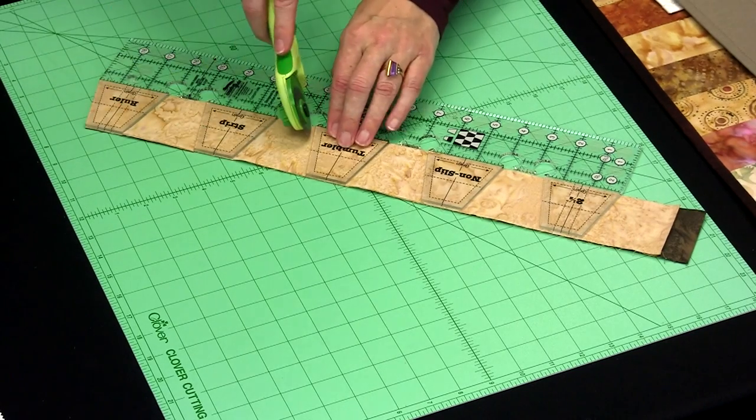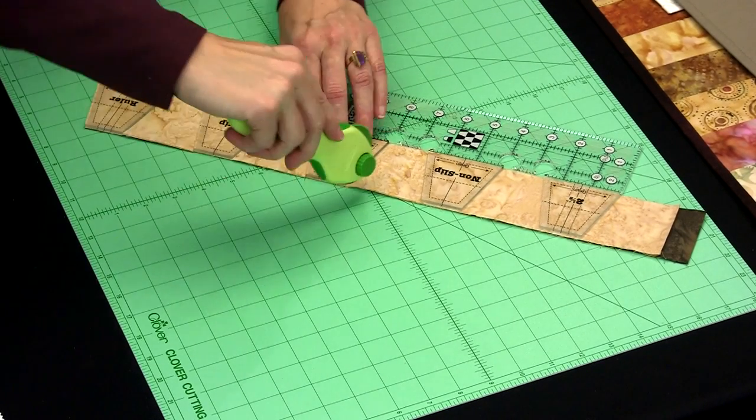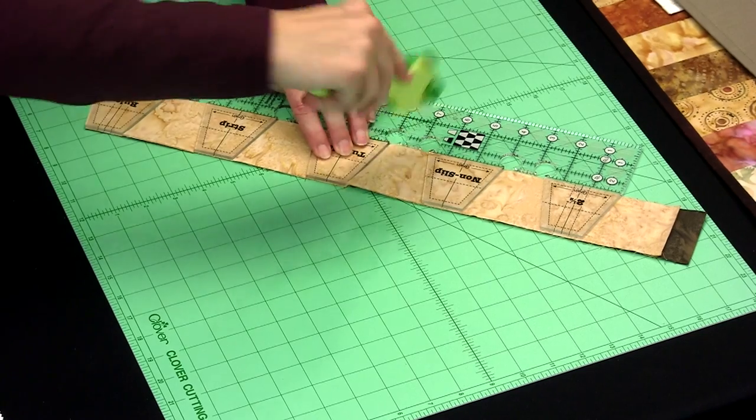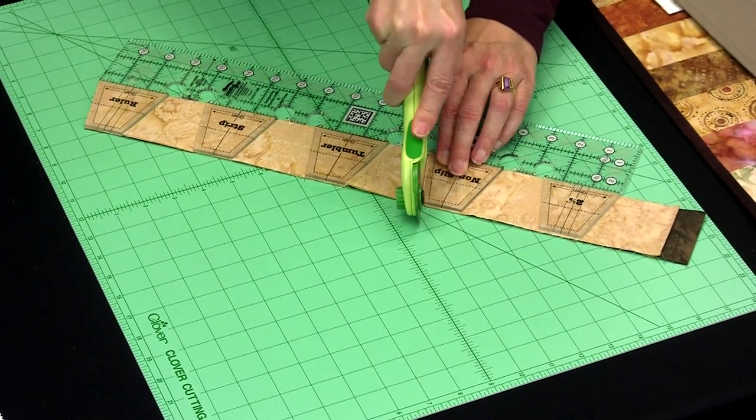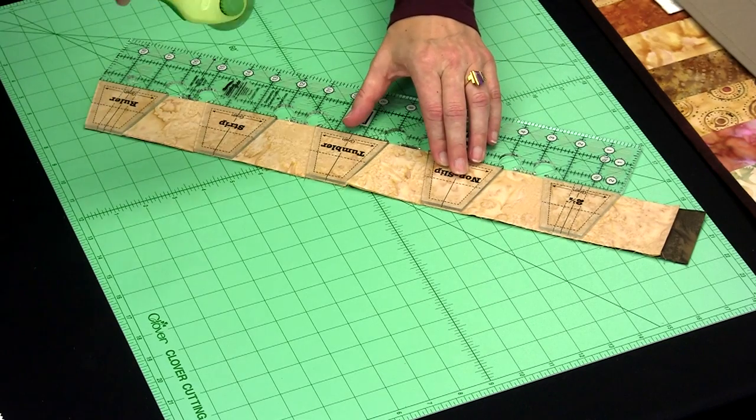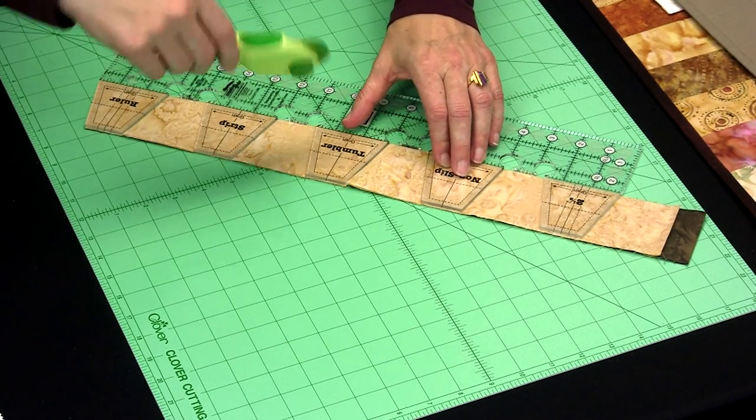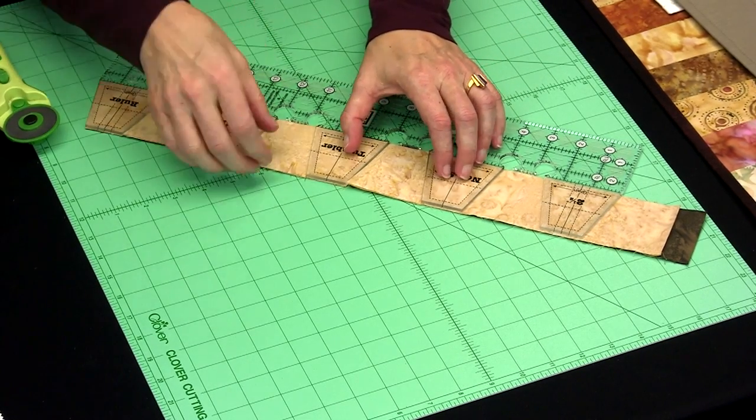So I'm cutting a little more slowly when I'm coming back towards the ruler. Whoops. And you always want to make sure that your blade is exactly perpendicular, straight up and down against the ruler.